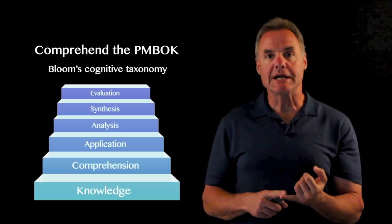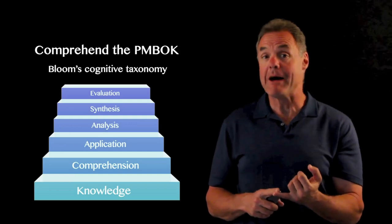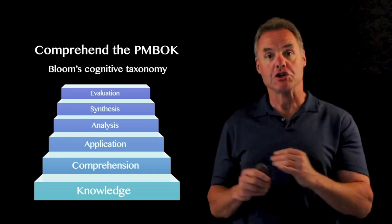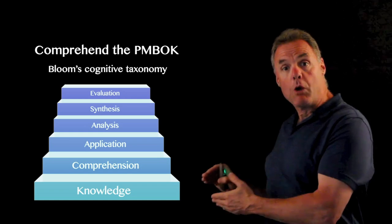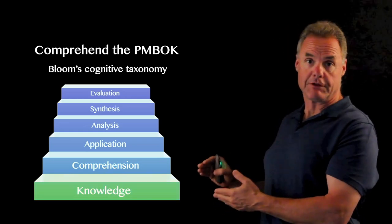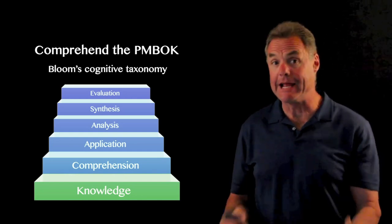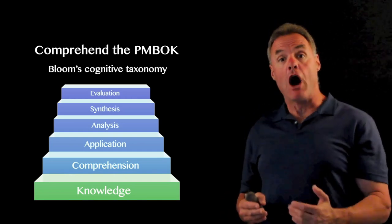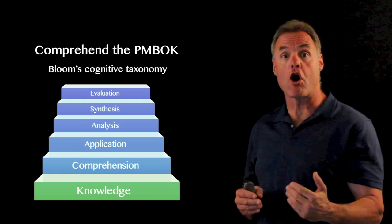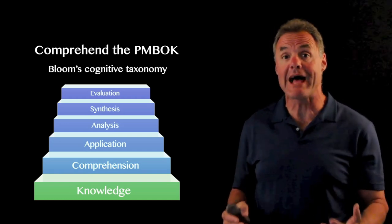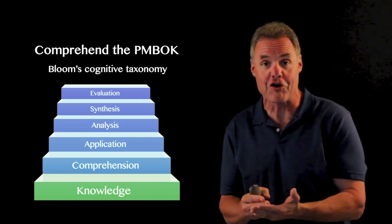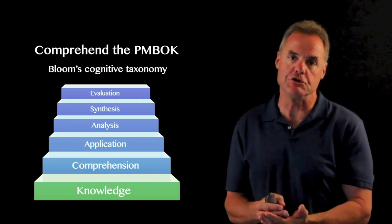Now Bloom's Cognitive Taxonomy, which came out in the 50s, shows levels of learning at the lowest level being the knowledge level of learning. So we gain knowledge by reading, by seeing, by hearing teachers talk. Knowledge is simply garbage in, garbage out. The ability to repeat what you just heard or write down things that you just saw.